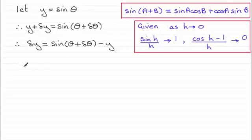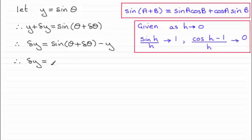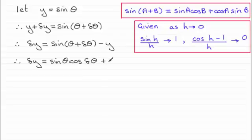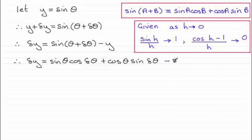The next stage is to work with the sine addition identity. I'm going to expand the sine of theta plus delta theta, replacing a with theta and b with delta theta. That gives us sine theta cosine of delta theta plus cosine theta sine of delta theta. And then we have minus y, which I replace with minus sine theta.